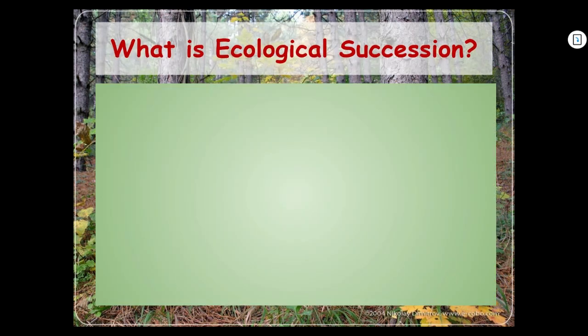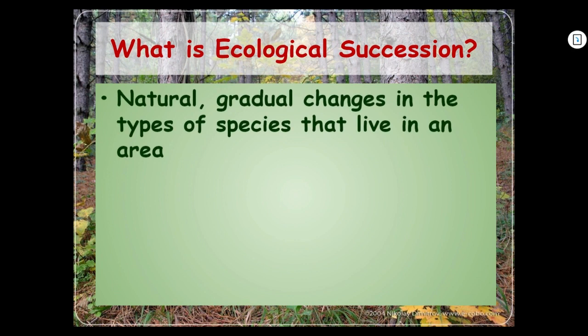What is ecological succession? Succession just means going from one thing to another. If you have a succession of presidents, one leaves and the next one comes in and so on — it's just replacing something in a line. So ecological succession is the natural, gradual changes in the types of species that live in an area. Things out in nature slowly change from one type of plant to another in a certain area.